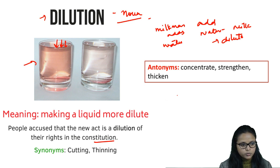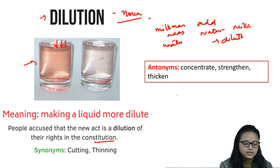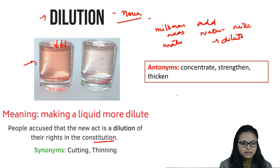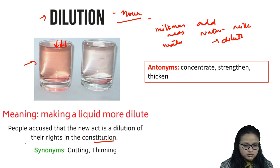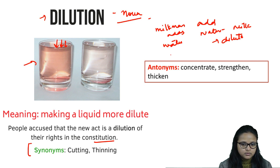Our constitution provides us many rights, but when there are amendments, sometimes these amendments dilute our rights — they become less strong, they become thin. Synonyms: cutting or thinning. Antonyms: concentrate — to make thick — strengthen, or thicken.